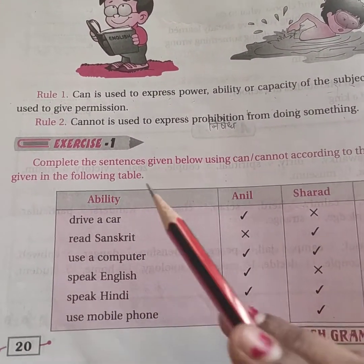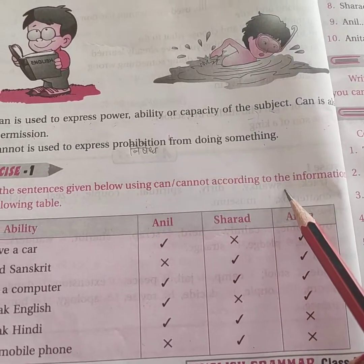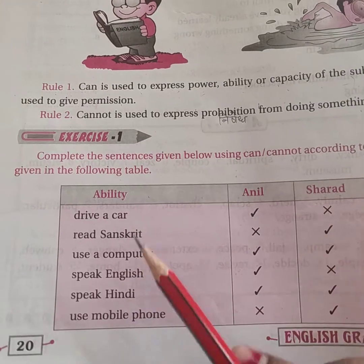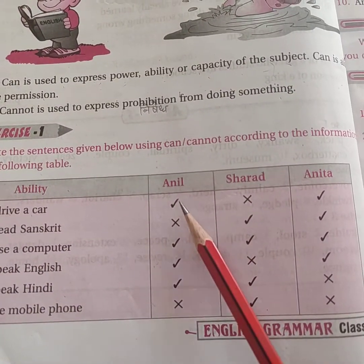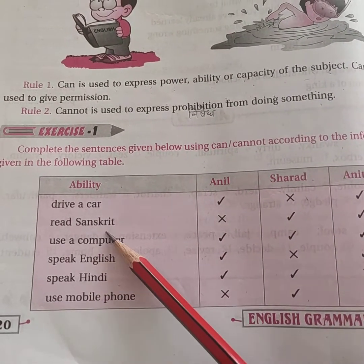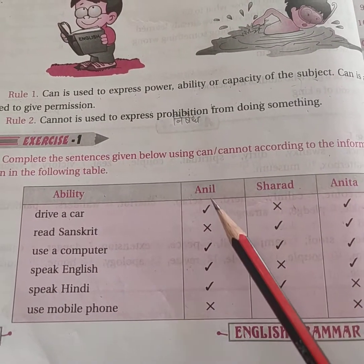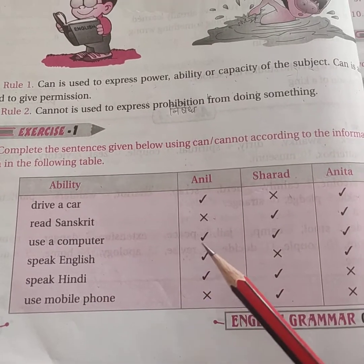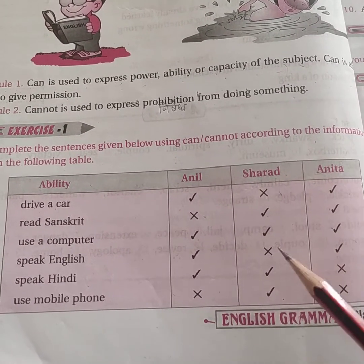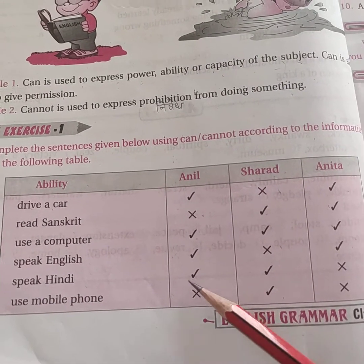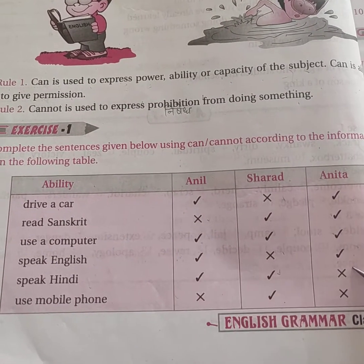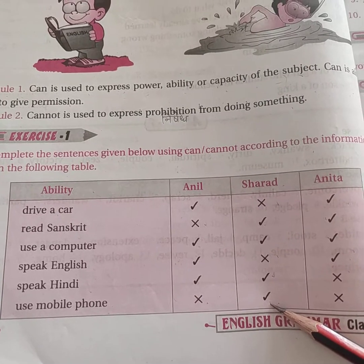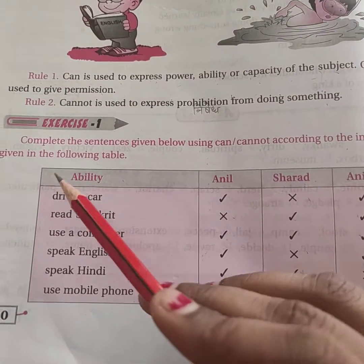Now come to this table. Complete the sentences given below using can or cannot according to the information given in the following table. यह exercise आप खुद करोगे, लेकिन मैं बता देती हूँ कि कैसे करोगे. यहाँ कुछ abilities दी हुई हैं: drive a car — अनिल और अनीता कर सकते हैं, शरद नहीं. Read Sanskrit — शरद और अनीता, अनिल नहीं. Use a computer — तीनों कर सकते हैं. Speak English — अनिल और अनीता, शरद नहीं. Speak Hindi — अनिल और शरद can, but Anita cannot. Use mobile phone — अनिल cannot, शरद can, अनीता cannot.